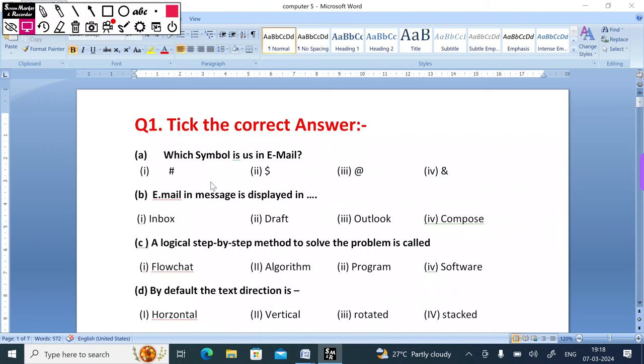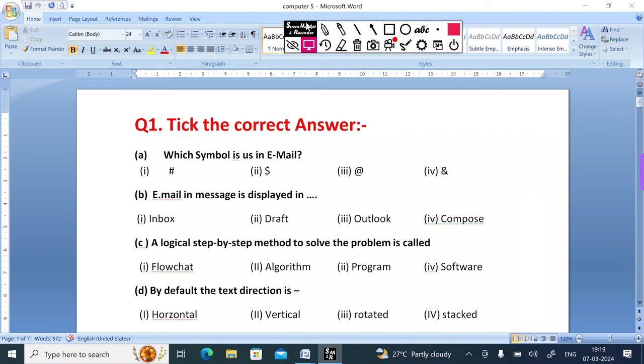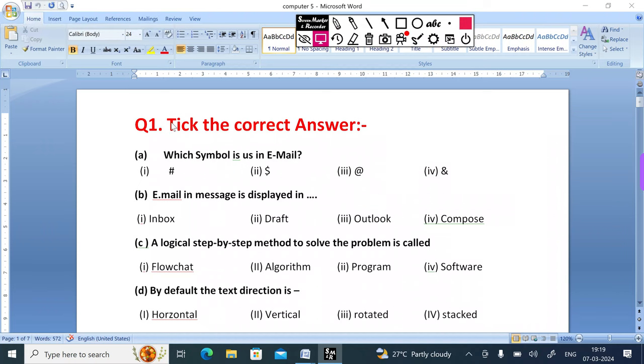Pick the correct answer. Number 1: Which symbol is used in email? Option 1 has dollar sign, 2 has S, 3 has at the rate, and 4 has ampersand. The correct answer is option 3, at the rate symbol.